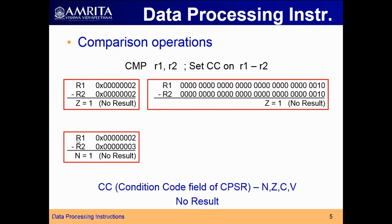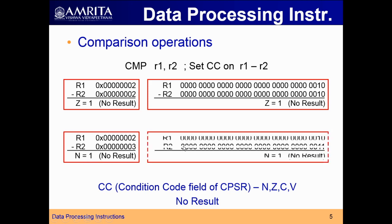Another example: R1 equal to 2, R2 equal to 3. The operation is R1 minus R2, which is 2 minus 3, giving negative 1. Again the result is not stored. Since the result is negative, the N (negative) flag will be set. In the first operation, the Z flag was set; in this operation, the N flag is set. But the result is not stored anywhere — only the condition code fields are updated.